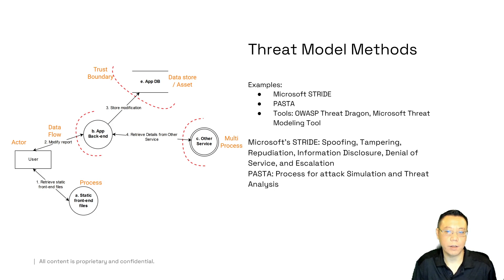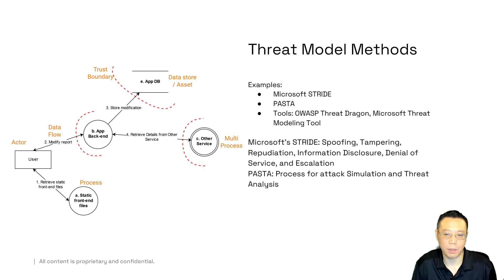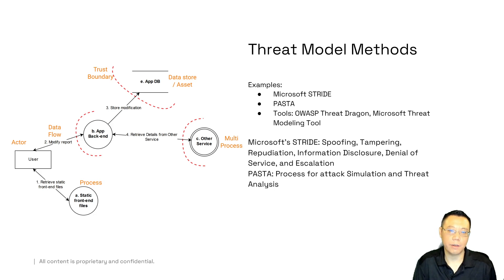STRIDE covers: spoofing, tampering, repudiation — which means can you prove or deny who did something, possibly in terms of certificates or public keys — information disclosure, denial of service, and of course privilege escalation if you actually compromise something, also known as post-exploit. There's also PASTA, which stands for Process for Attack Simulation and Threat Analysis. It's almost like threat hunting but in reverse — you're actually trying to think like an attacker and go through different attack simulation trees and playbooks to see if it has an effect on your environment.